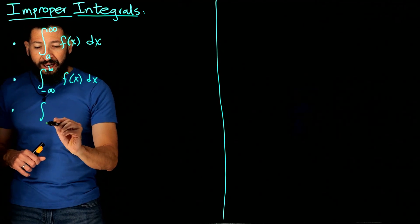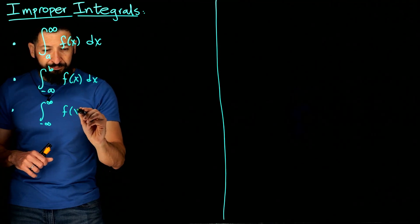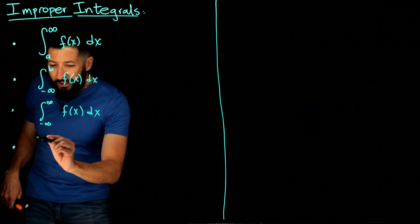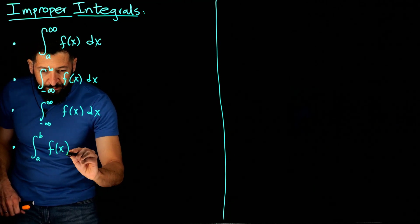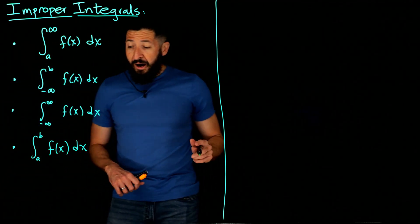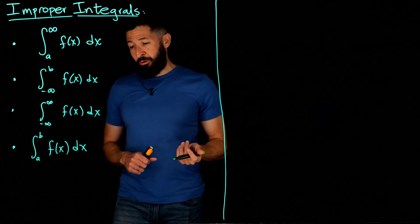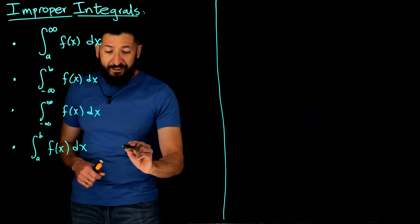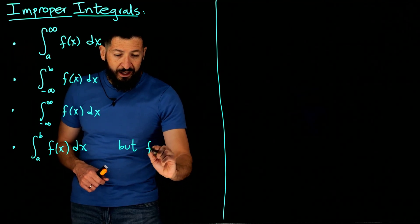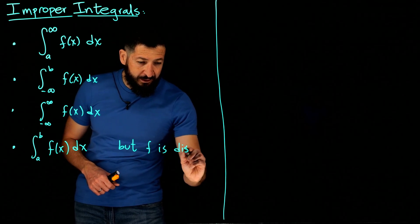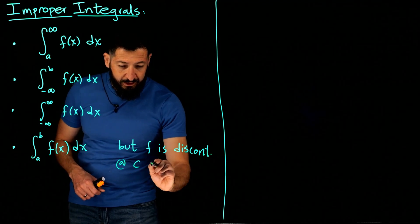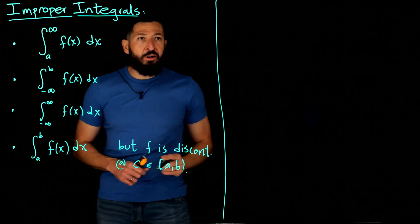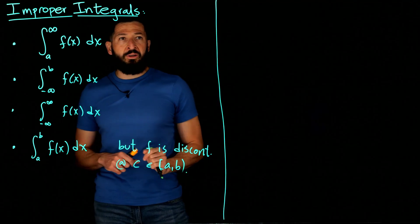You could also have the case when you have negative infinity to infinity. The last type is a little bit more subtle — it would be the integral from A to B. We know how to do that with the second fundamental theorem of calculus, but the hypothesis requires the function be continuous on that interval from A to B. If there exists a C in the open interval where F is not continuous, then you have another type of improper integral.